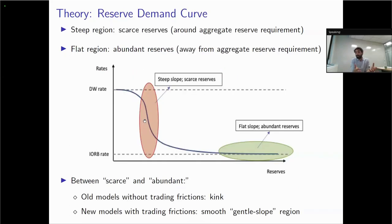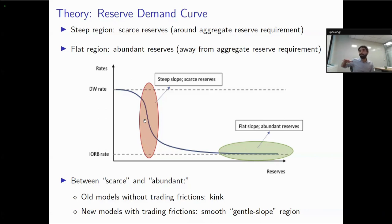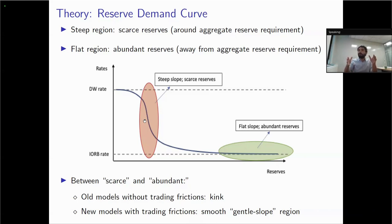All models of the reserve demand curve identify two regions: a region with a very steep slope — the region of scarce reserves, usually around aggregate reserve requirements — and a region far from reserve requirements where the curve is perfectly flat, called the region of abundant reserves. What's in between depends on the model. Models without trading frictions predict a piecewise linear relationship with a kink between flat and steep. More modern models allowing for trading frictions predict an intermediate region with a gentle, smooth slope of transition.